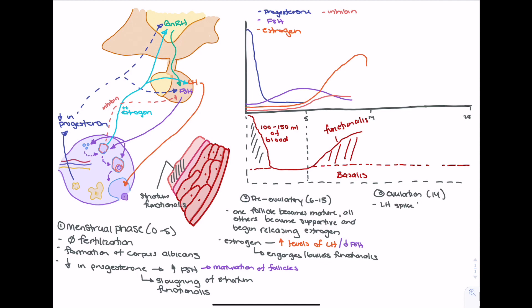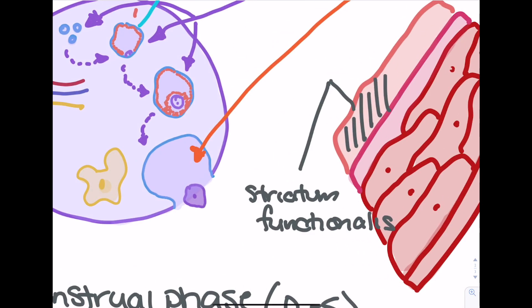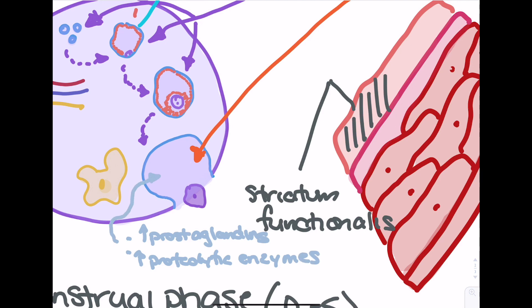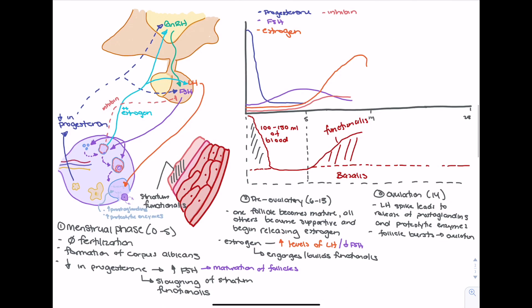During ovulation, luteinizing hormone levels spike. Estrogen levels have been triggering this release, and the spike at day 14 leads to the release of prostaglandins and proteolytic enzymes. The combination of these two things causes the follicle to burst and release its egg, resulting in ovulation. The prostaglandins cause an increase in fluid and swelling within the follicle, while proteolytic enzymes cause lysis of the cell wall, making it easier to burst and release the egg.